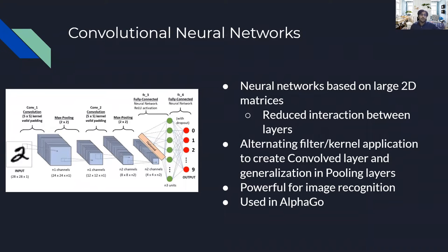AlphaGo uses what is called a convolutional neural network to process information and to operate. Convolutional neural networks are neural networks based on large 2D matrices with reduced interaction between layers. They have alternating filter and kernel layers that create convolved layers and generalization in pooling layers. This is very powerful for image recognition and is one of the main things used in AlphaGo.